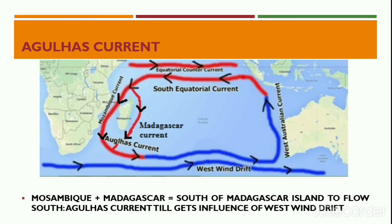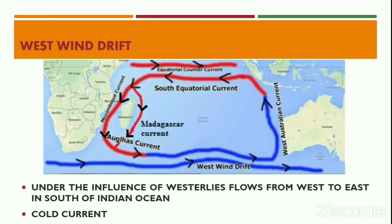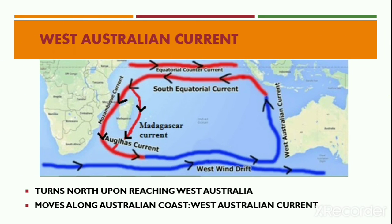The Agulhas Current continues southward until it comes under the influence of the West Wind Drift. The West Wind Drift moves from west to east in the southern part of the Indian Ocean. It is a cold current, influenced by the westerlies and the rotation of the earth.